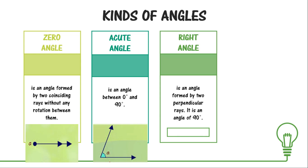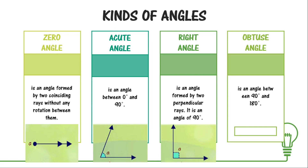The third kind is the right angle — an angle formed by two perpendicular rays, meaning its measure is exactly 90 degrees, no more, no less. The next kind is the obtuse angle, also called a blunt angle, which is an angle between 90 degrees and 180 degrees — it cannot be 90 degrees, it cannot be 180 degrees, just between them.